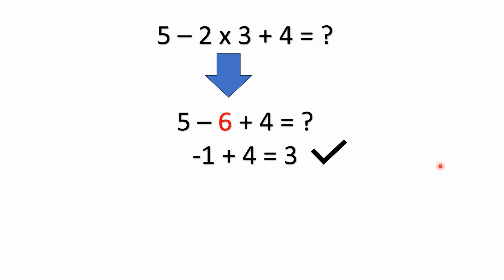So here in this problem, we don't have any parentheses or brackets. We don't have any exponents, but we do have multiplication. So multiplication would take the highest priority here. So the first thing that we would do is multiply two times three, which gives us six.